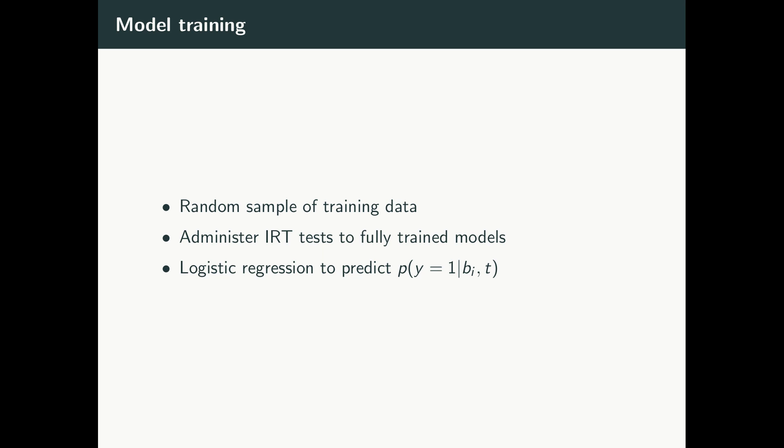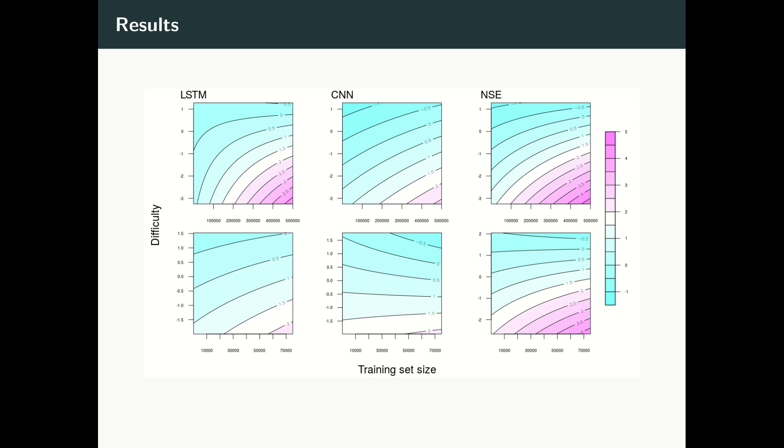This slide shows a contour plot of the results. The top row is the results for the NLI task, and the bottom row is the results for the sentiment analysis task. The x-axis are the training set sizes, the y-axis are the item difficulties, and the contours represent the odds that the model will label an item correctly. We'll zoom in on a few of the plots for a few more details.